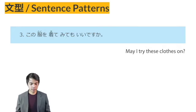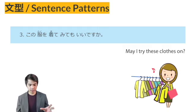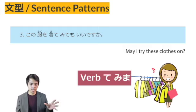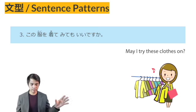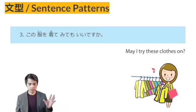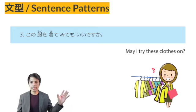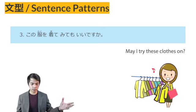Sentence Pattern No. 3: KONO FUKU WO KITEMITEMO II DESU KA. The pattern used in this sentence is Verb TE MIMASU. The verb TE MIMASU is conjugated in TE form plus MO II DESU KA. This pattern is used to ask permission to do something.